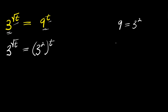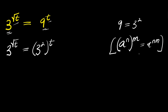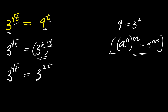Now, if you consider a to the power of n, and this is to the power of m, this equals a to the power of n times m. Applying this identity, I am going to have 3 to the power of square root of t equals 3 to the power of 2 times t, that is 2t.